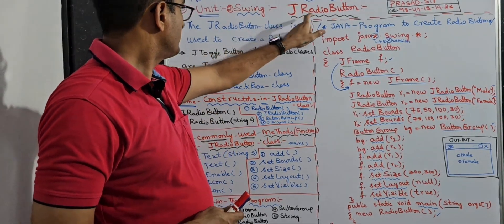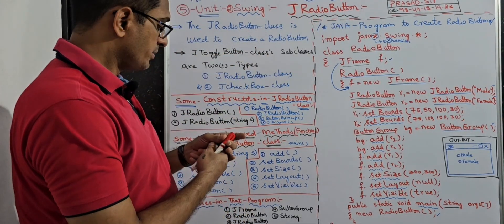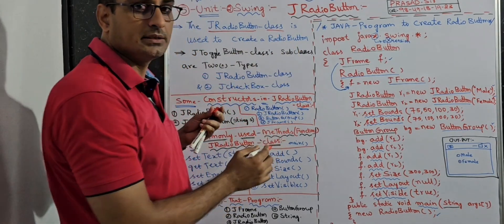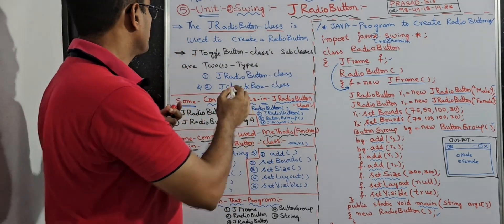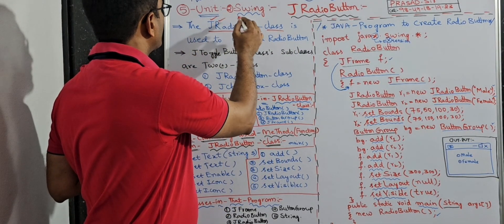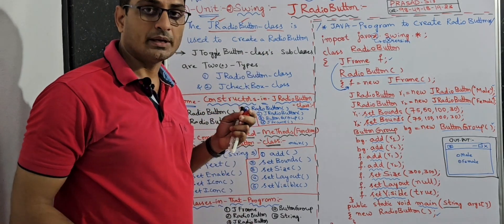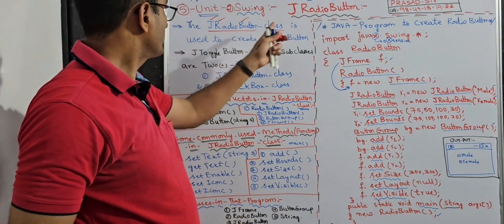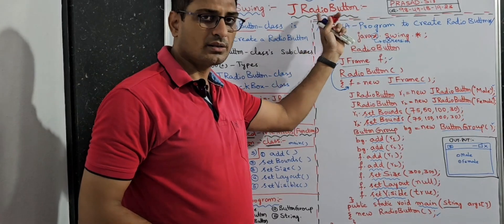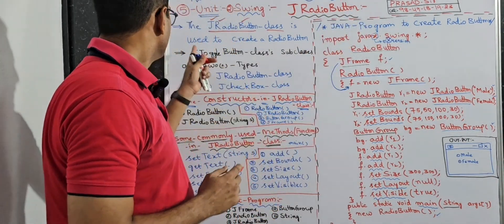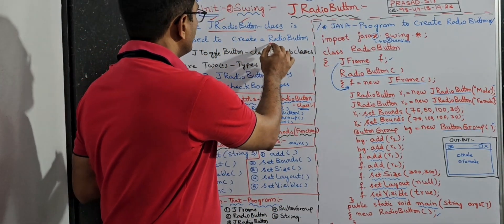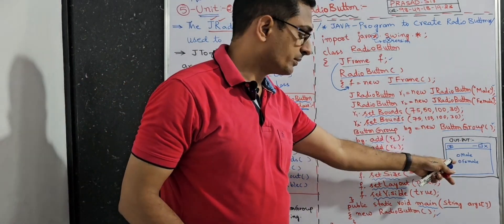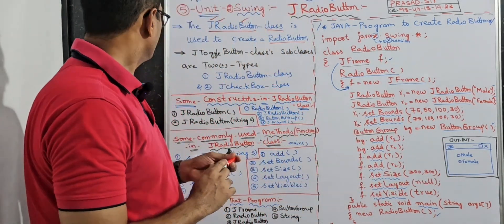The topic is JRadioButton. JRadioButton is a class. Because it is a class, the naming convention is J capital, R capital, and B should be capital — no space in between words. JRadioButton means Java radio button class. It is used to create radio buttons, like the output shown here for the program.